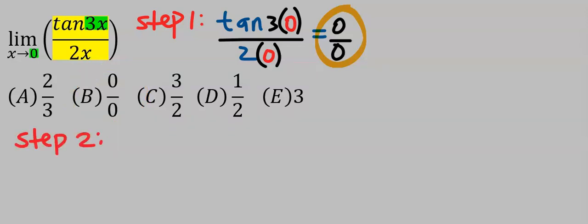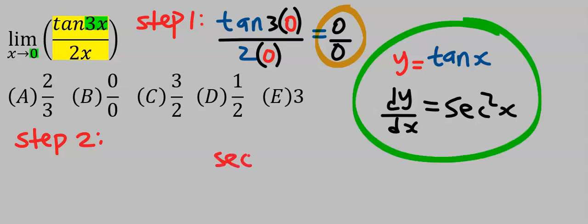Next, step number two: apply L'Hôpital's rule. Here we are going to differentiate each variable separately. To solve this, that is to differentiate this function, let's recap that if you're given tan x, the dy/dx is sec²x.